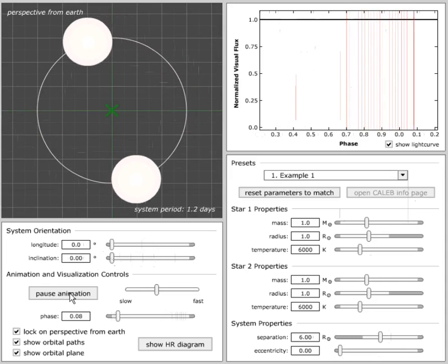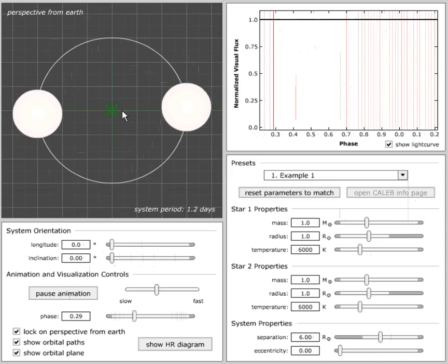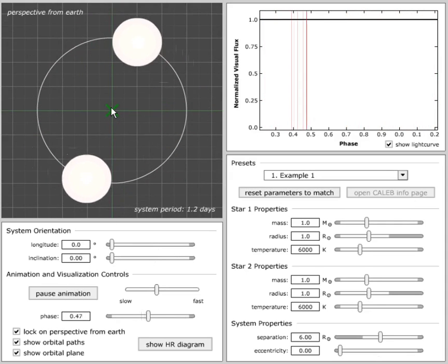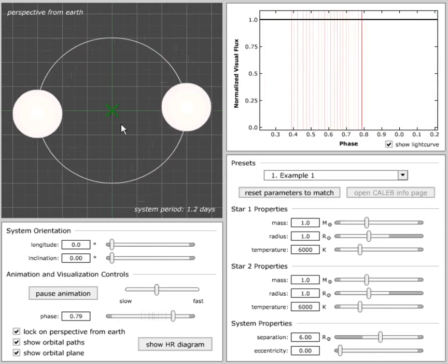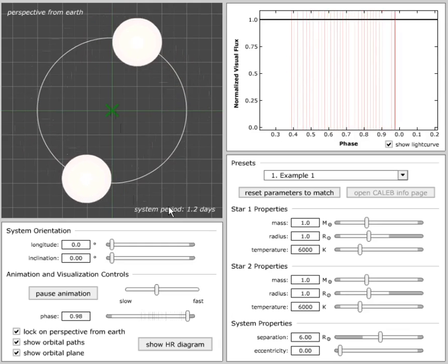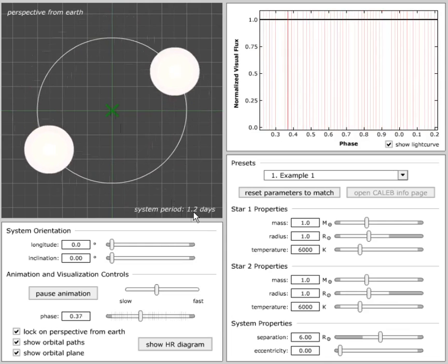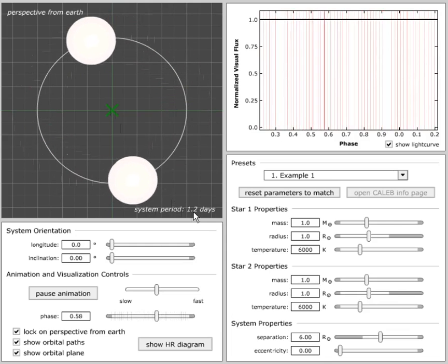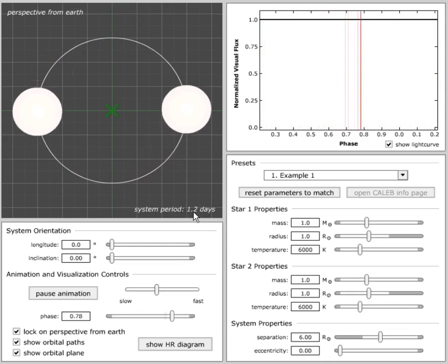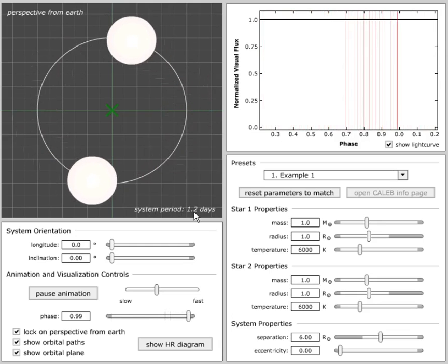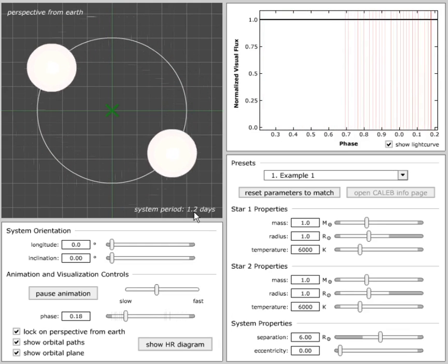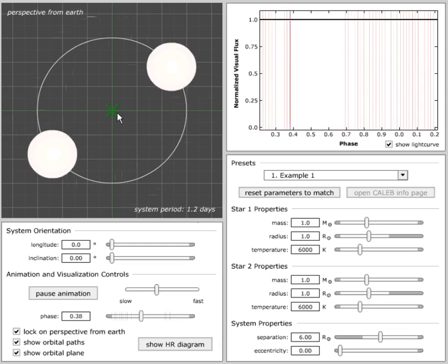Some of the questions we might ask include, what does this green X represent? Okay, the center of mass. The simulator says that the period is 1.2 days. Do both stars have the same orbital period? Okay, do they have the same speed? Okay, what are the stars actually orbiting, bringing students back to the concept of the center of mass?